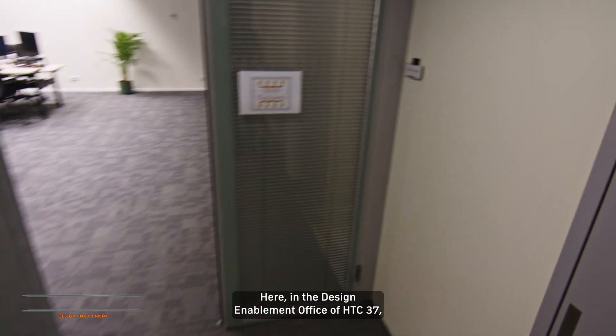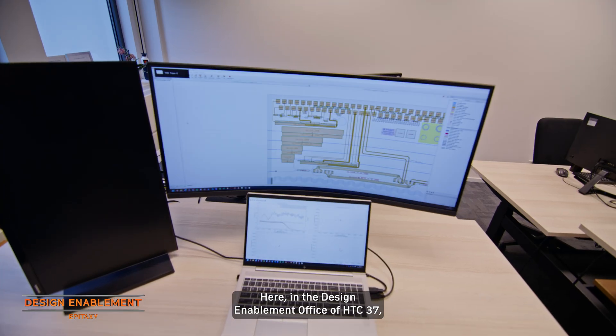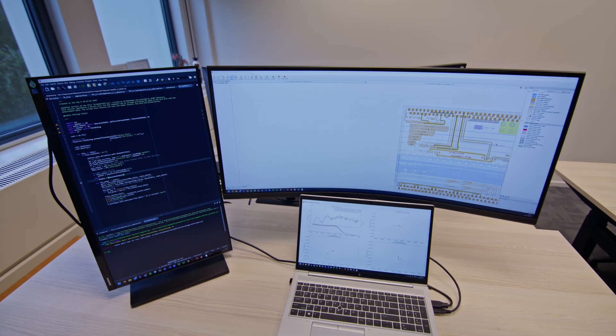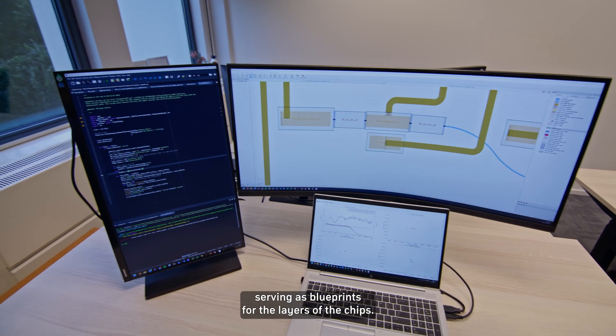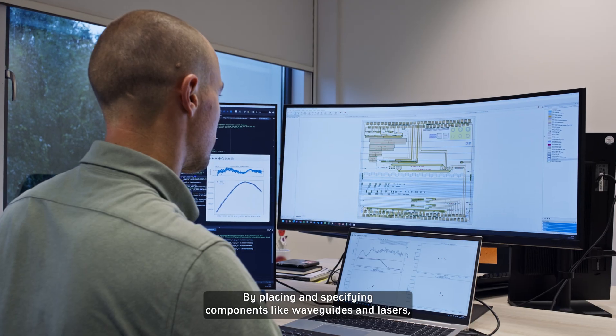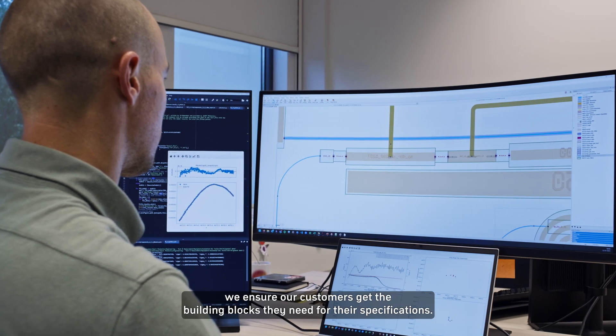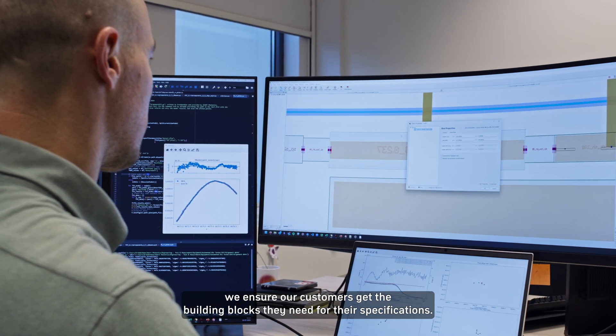Here, in the design enablement office of HTC 37, we are hard at work translating the customers' needs into mask designs, serving as blueprints for the layers of the chips. By placing and specifying components like waveguides and lasers, we ensure our customers get the building blocks they need for their specifications.